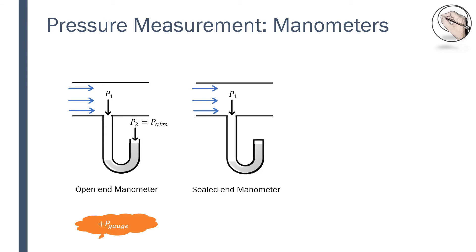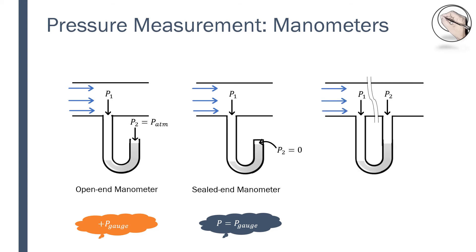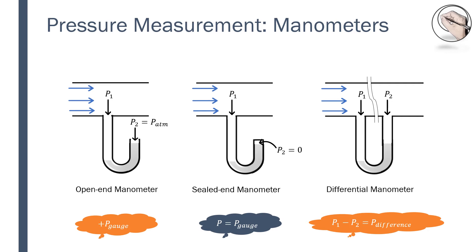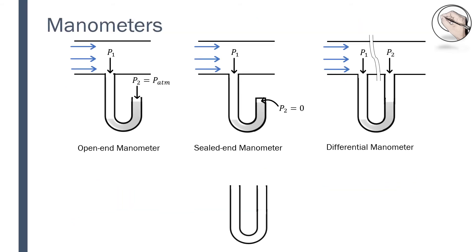The sealed-end manometer is similar to the open-end manometer, only it is not exposed to the atmosphere. The small area above the manometer fluid on the sealed end has no fluid, so it is an almost perfect vacuum. We cannot safely say that it is a perfect vacuum because some manometer fluid might evaporate into or condense from that space. With no pressure on the other end, the recorded gauge pressure is equal to the absolute pressure. The differential manometer measures the pressure difference of two separate fluids. Because the first pressure is stronger than the second, we get a positive value for pressure difference. Labelling the manometer will help us to derive the general manometer equation.